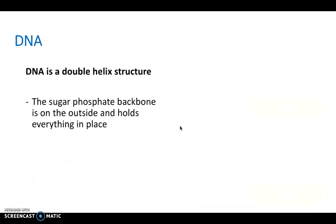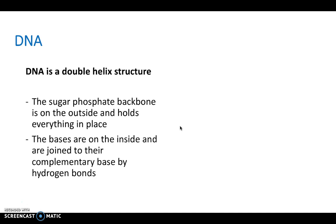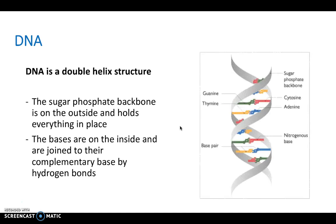So as we've said, DNA is a double helix structure. And the sugar phosphate backbone is on the outside and holds everything in place. And the bases are on the inside and are joined together through their complementary base by hydrogen bonds. So as you can see, the adenine is joined to thymine here, and cytosine are joined to guanine.